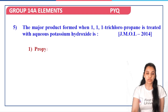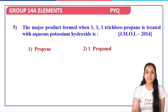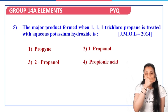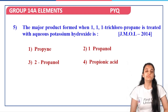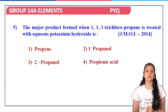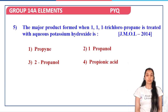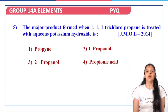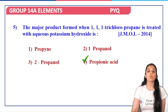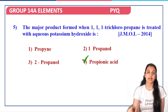Next question: the major product formed when 1,1,1-trichloropropane is treated with aqueous KOH. This is not strictly from the Group 14 elements topic, but it is important from an organic chemistry point of view. When 1,1,1-trichloropropane reacts with aqueous KOH, you get propionic acid. That's an information-based answer to note down.